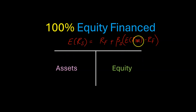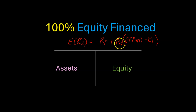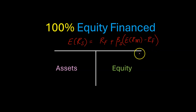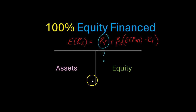But what if these inputs are not given? What if the risk-free rate is not given? What if the equity beta or the expected market risk premium are not given? Then how do we estimate them? In this specific video, I want to talk to you about how you can estimate just the risk-free rate.